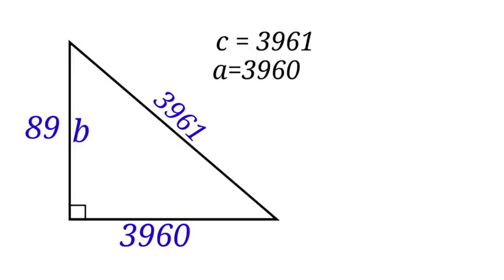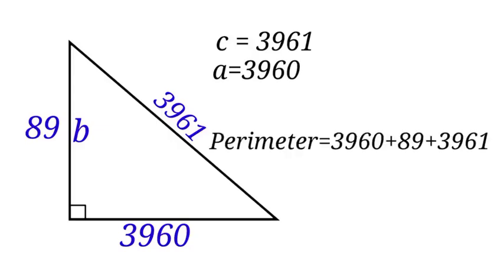Now we have gotten the values of A and C. We are going to go ahead and find the perimeter of this right angle triangle. The perimeter will be equal to 3,960 plus 89 plus 3,961. When we add that up, we will have 8,010. The perimeter of this right angle triangle is 8,010.